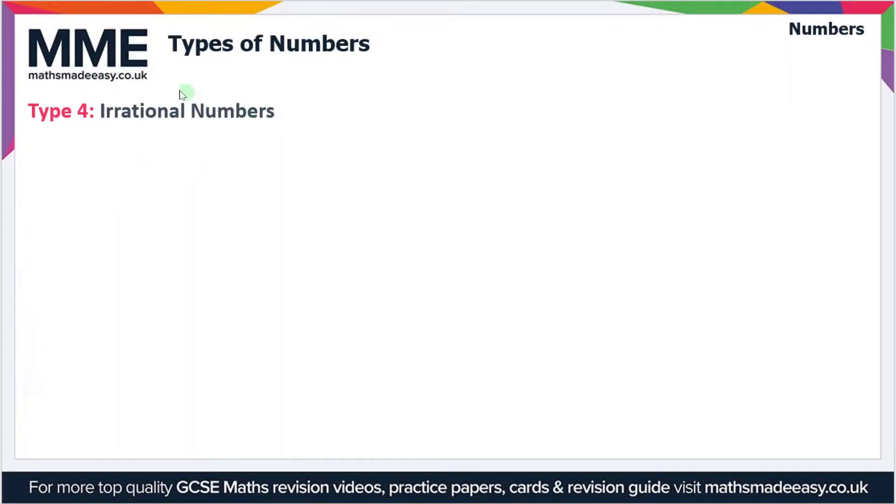Moving on, let's have a look at irrational numbers. Irrational numbers are numbers which can't be expressed as fractions a over b, where a and b are integers. Examples include